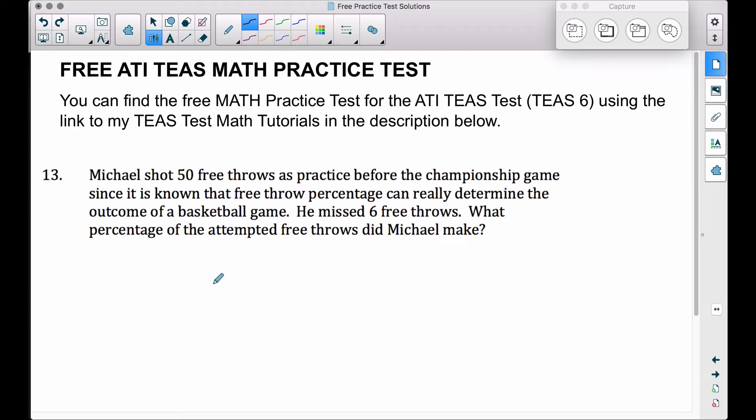Since it is known that free throw percentage can really determine the outcome of a basketball game, he missed six free throws. What percentage of the attempted free throws did Michael make? Be careful here - he missed six, but we're trying to find the percentage of the free throws that he made.